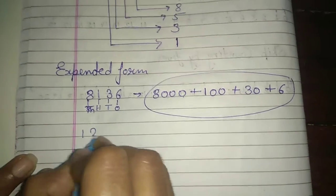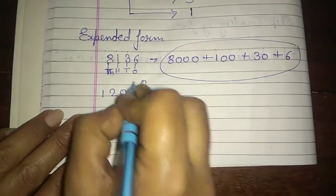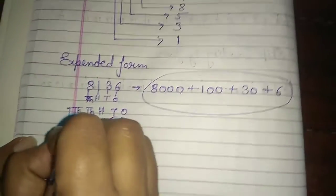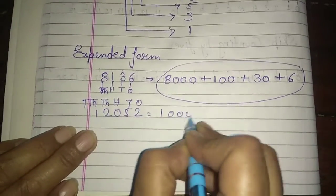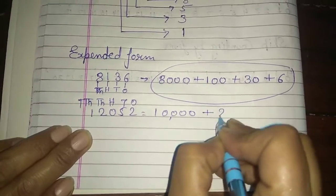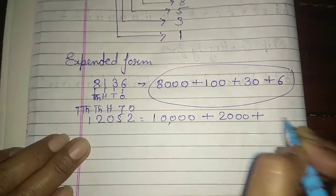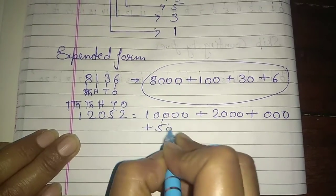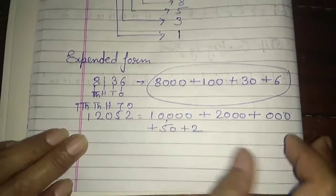See the next example. One, two, zero, five, two. So, ones, tens, hundreds, thousands, and ten thousands. Ten thousand plus two thousand plus zero plus fifty plus two. This is expanded form.